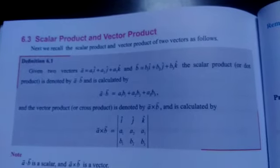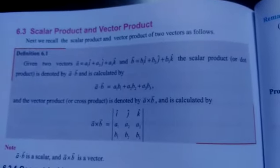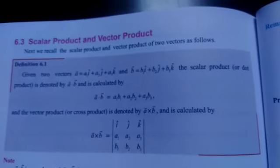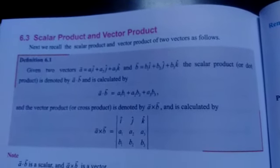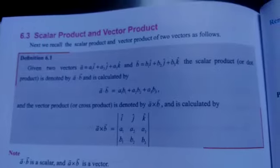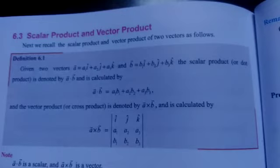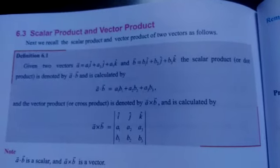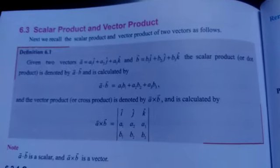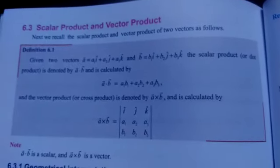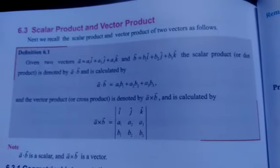Given two vectors: a vector equal to a1î + a2ĵ + a3k̂ and b vector equal to b1î + b2ĵ + b3k̂. The scalar product, another name is dot product, is denoted by a·b and calculated as a·b = a1b1 + a2b2 + a3b3.